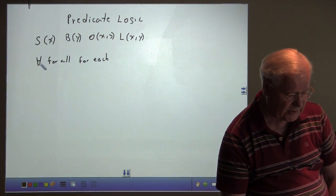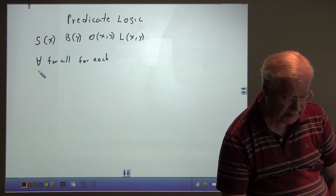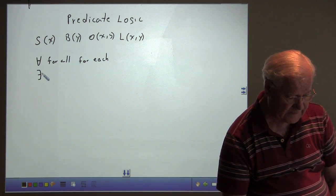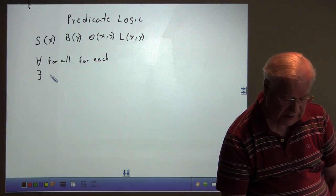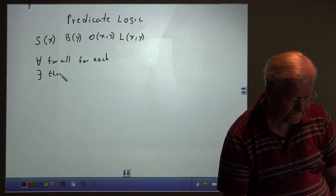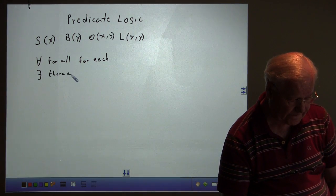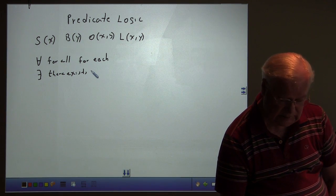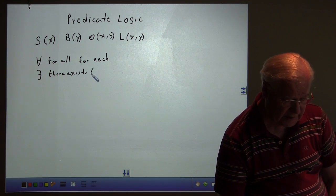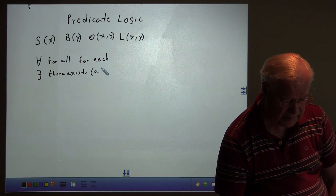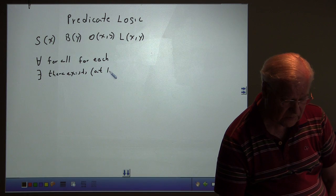The other symbol that we use in predicate logic is the backwards E, and that stands for, there exists. And understood in there, although not always said, is the concept, at least one.